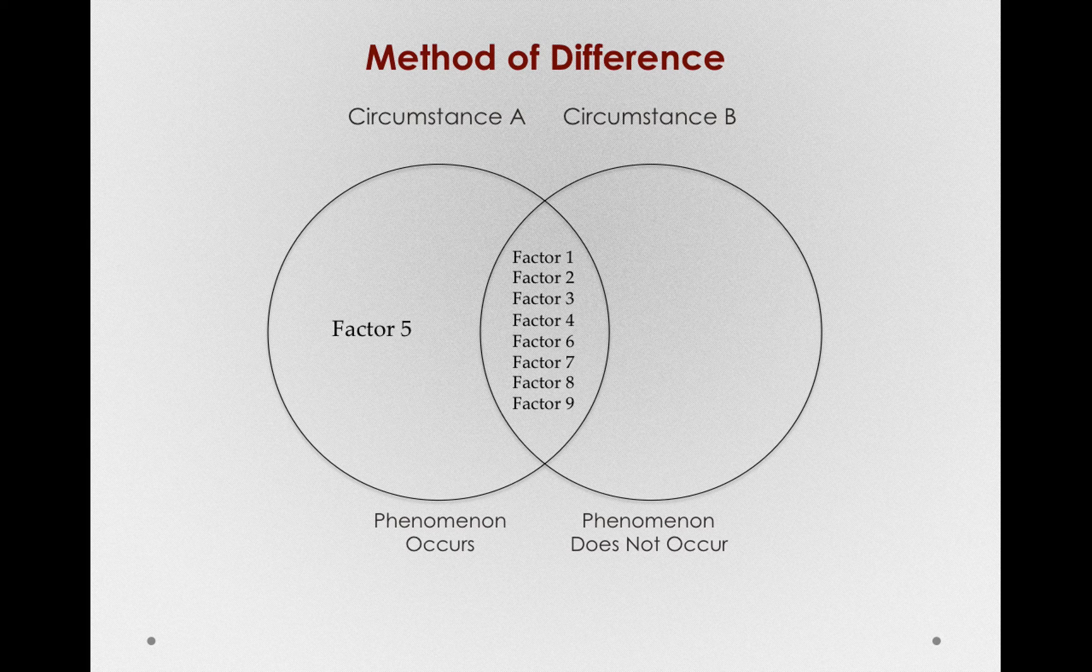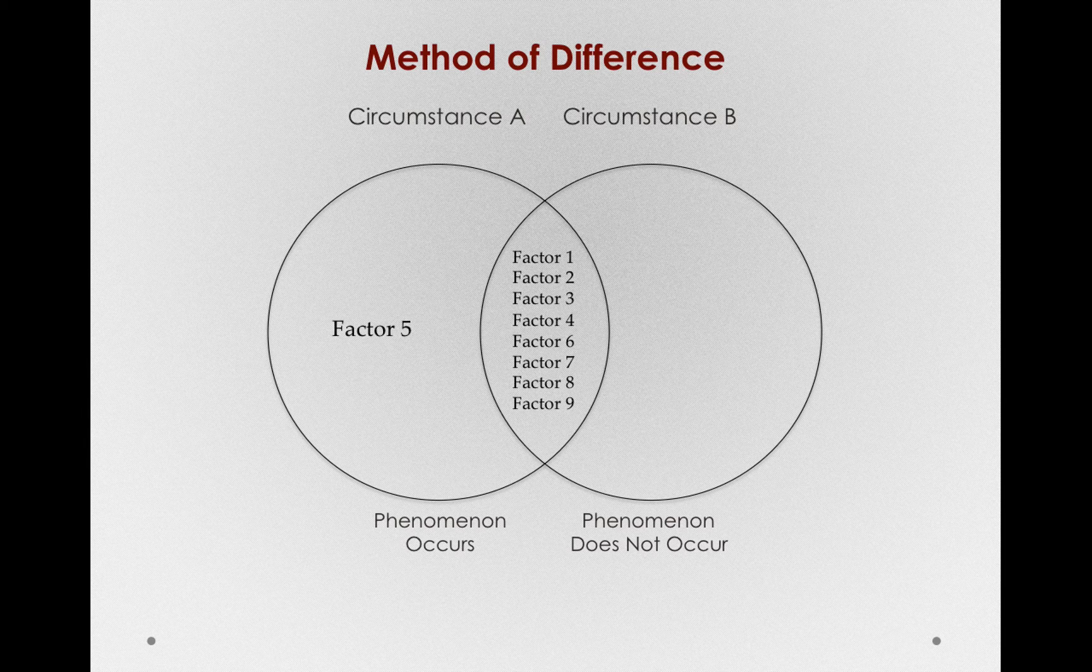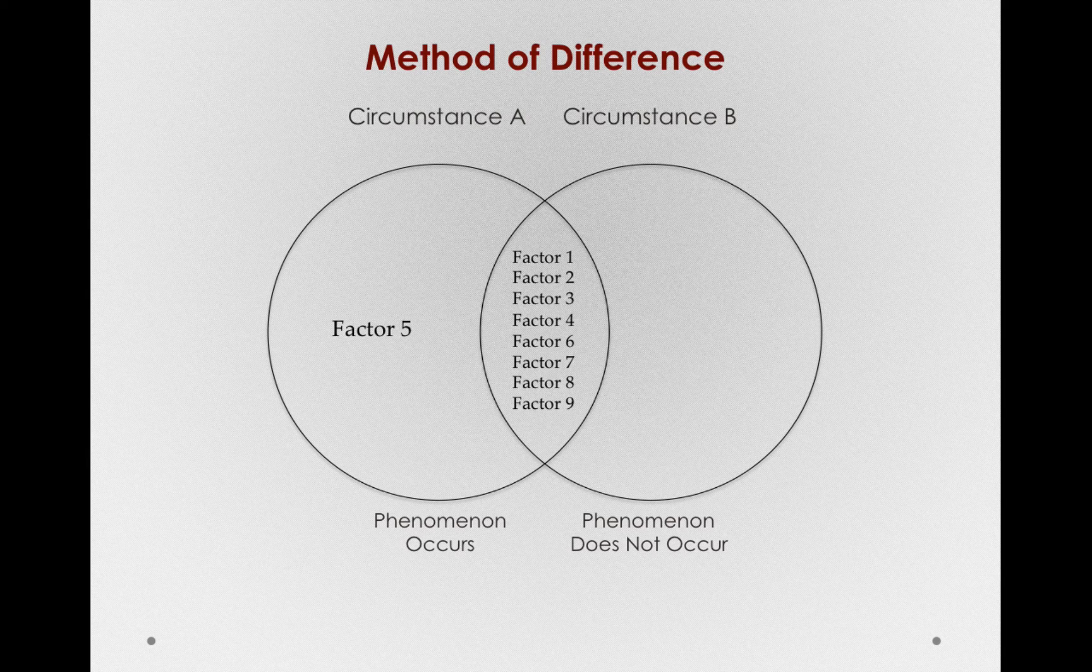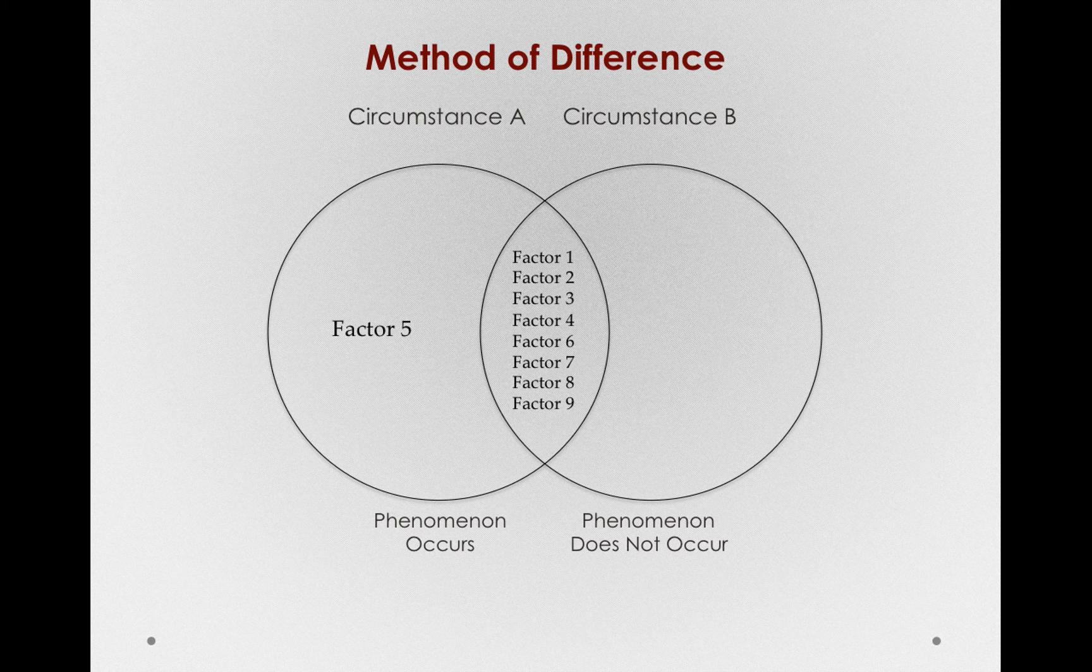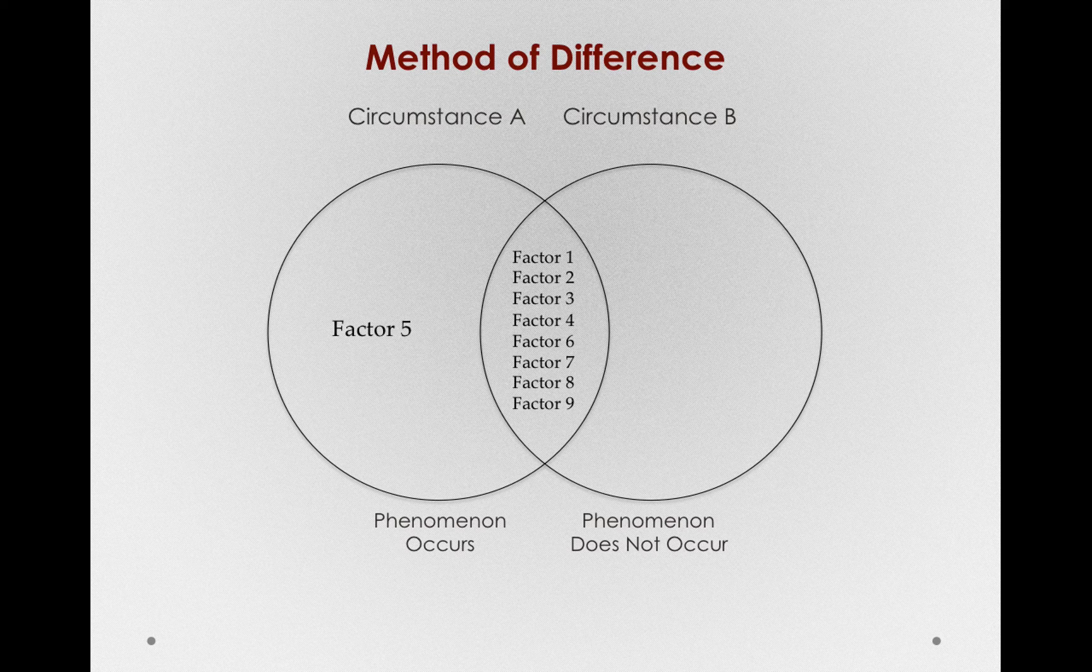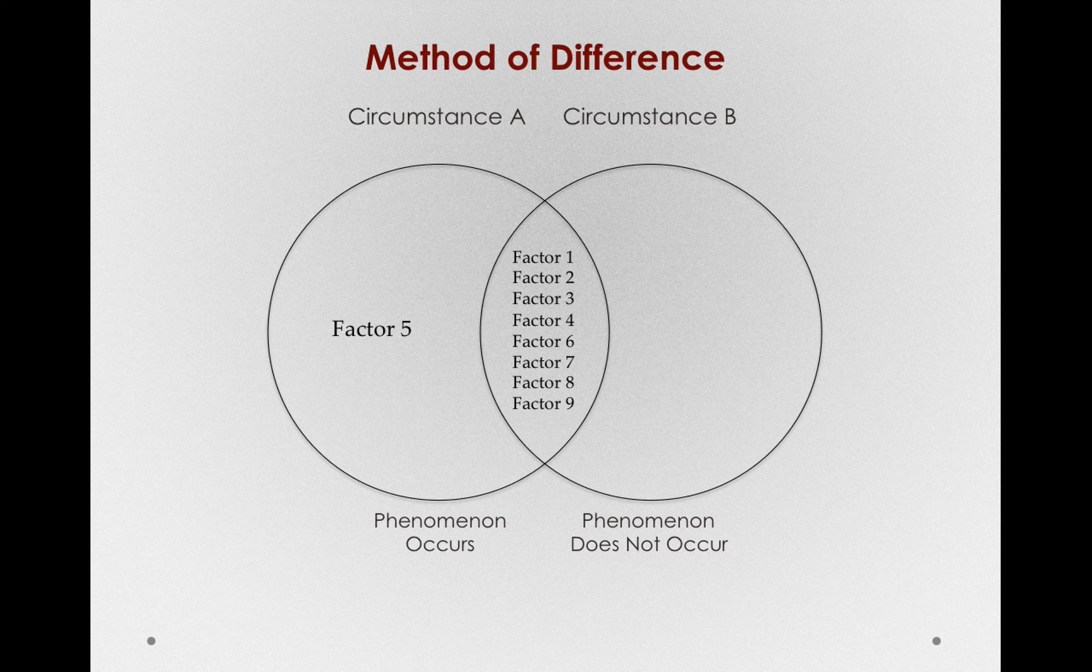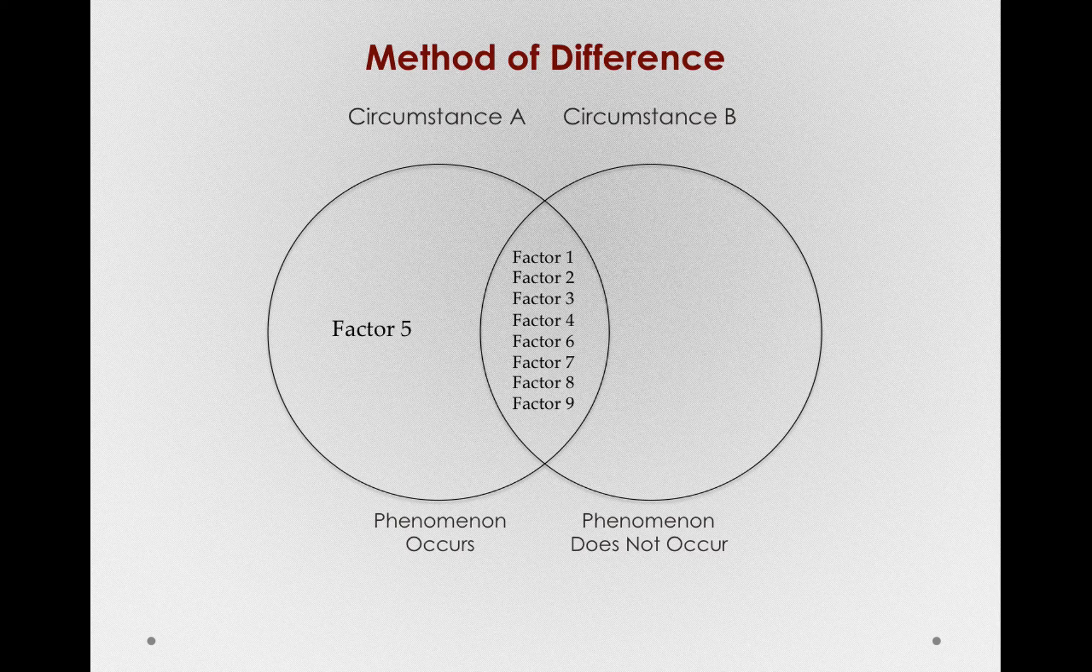Given this observation, we can say that factor 5 is somehow causally related to this phenomenon, and if we were adding liquids to a tincture, we can assume that factor 5 is causing the phenomenon rather than the phenomenon causing me to add factor 5. But notice again that the method of difference is identifying the factor connected to the causation, not necessarily the order or the direction of the causation.